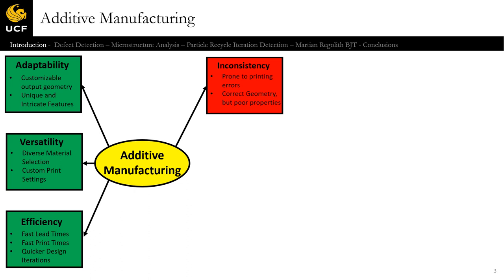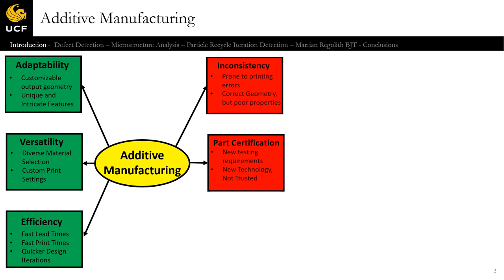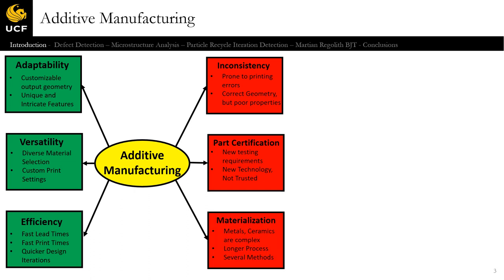Some weaknesses of additive manufacturing include inconsistency — anyone who's used a 3D printer knows they do tend to make mistakes, even simple PLA ones, but that also occurs for more advanced printers. Part certification is an ongoing process to determine if a part manufactured through these new techniques can be trusted in an industrial environment. And materialization is also a weakness — metals and ceramics are very complex, the processes are longer, and the full capability of printing metals and ceramics is not quite there yet.